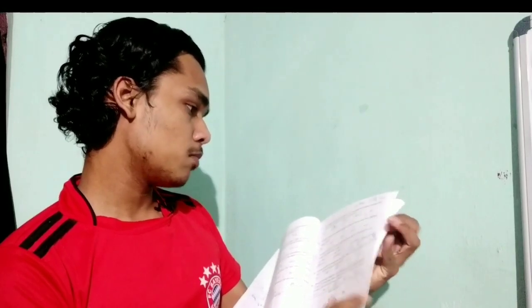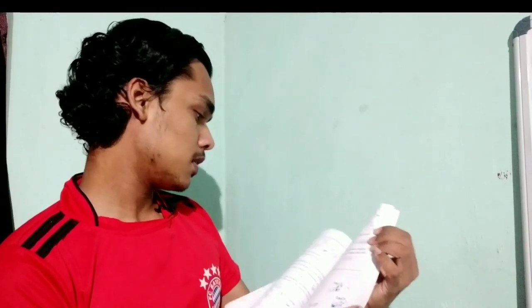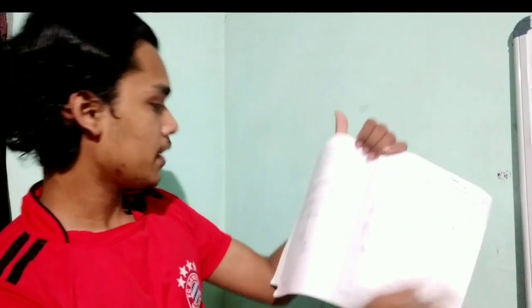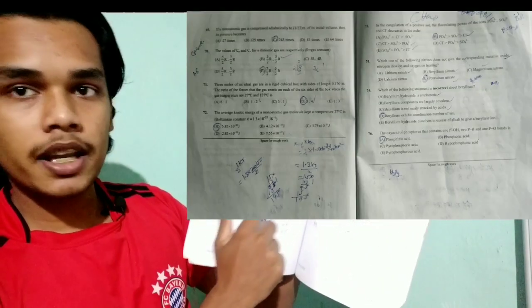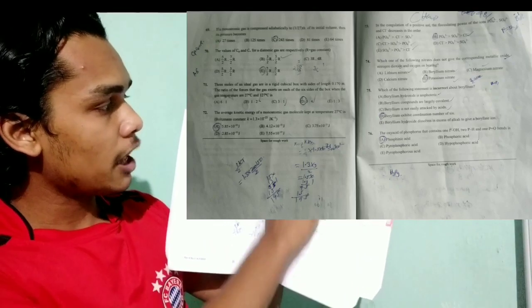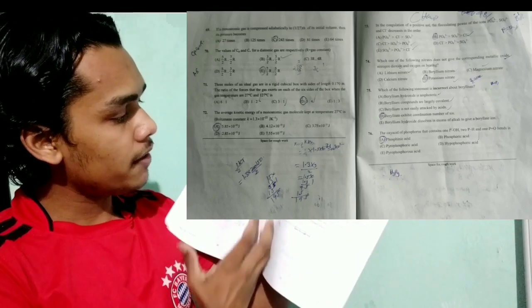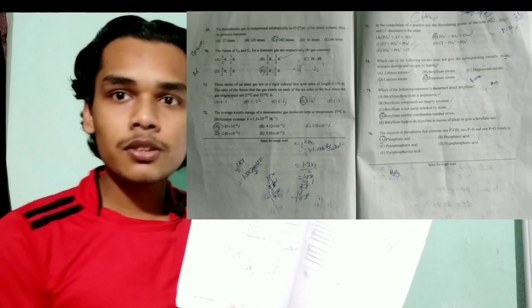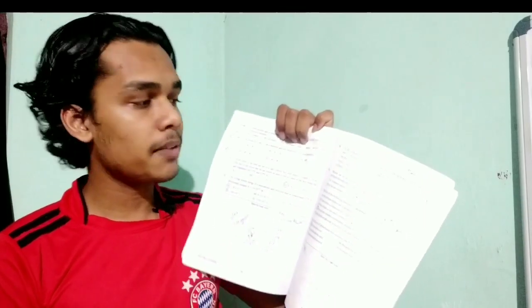There are 72 questions, and chemistry is in the middle section of the question paper. Especially if there are symbols in chemistry, we may not recognize them immediately. I have a personal suggestion that you can start with chemistry because there is a theory part in chemistry. It is better to start with chemistry.